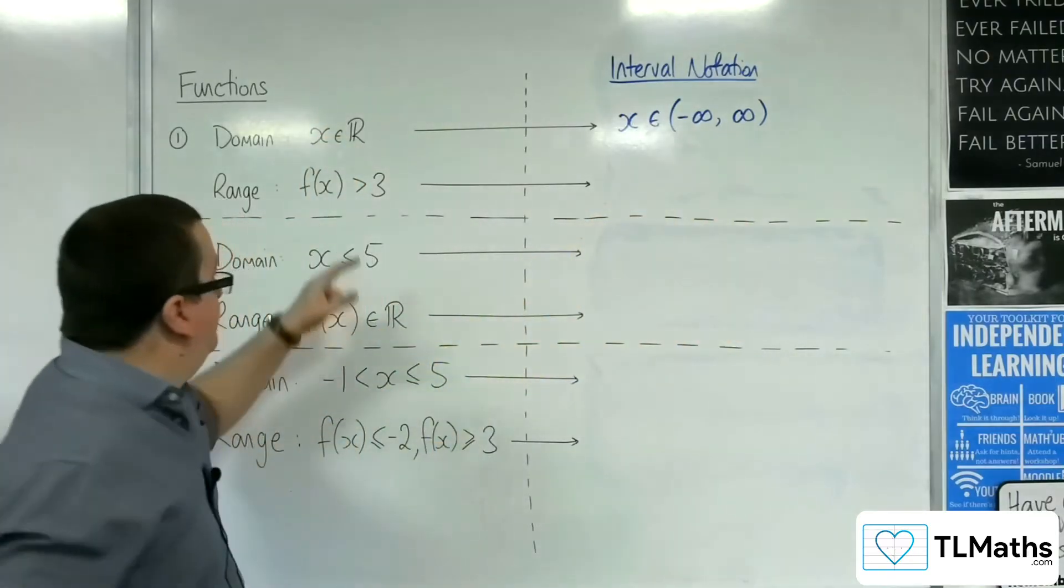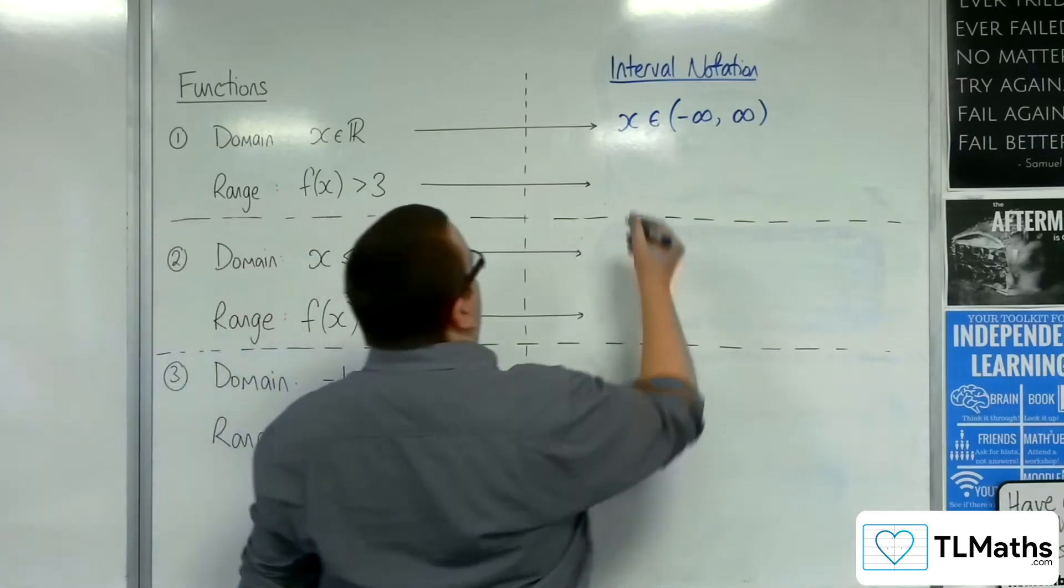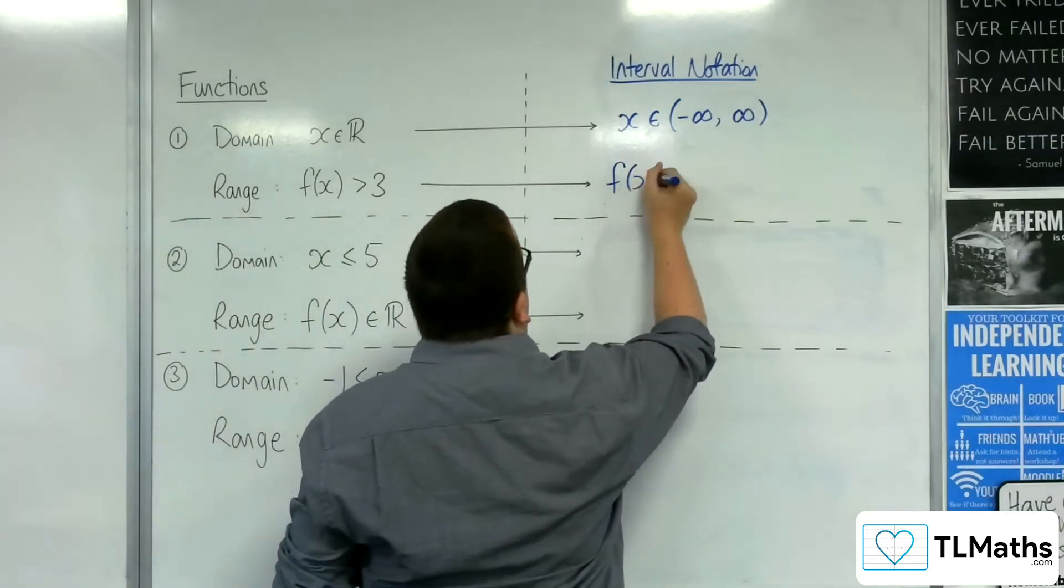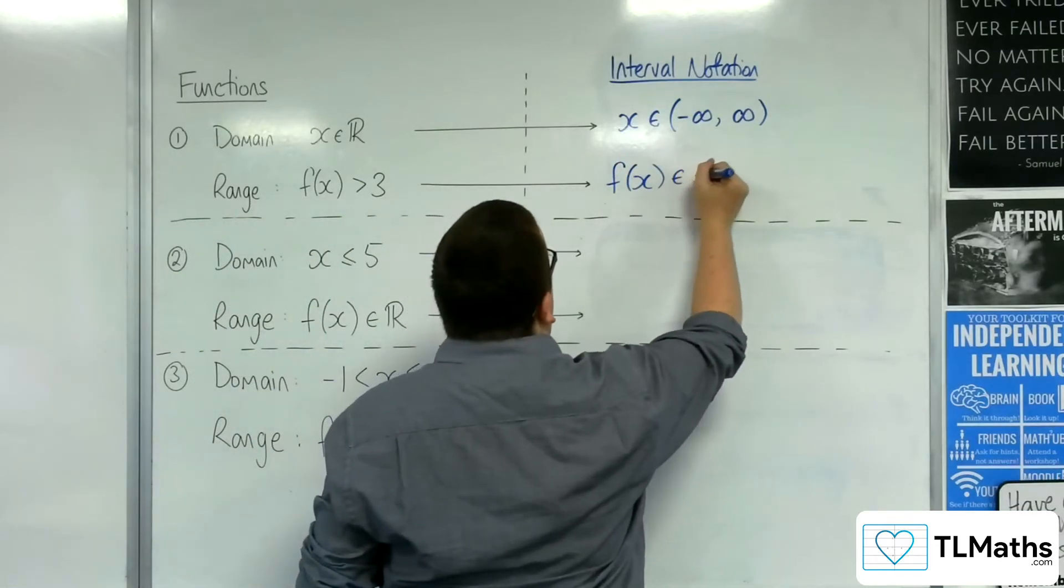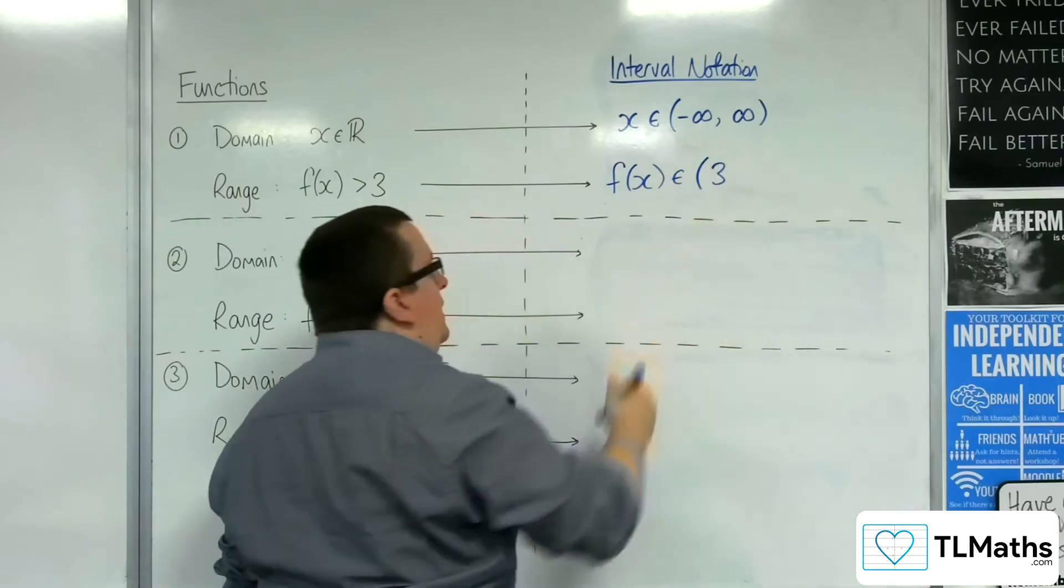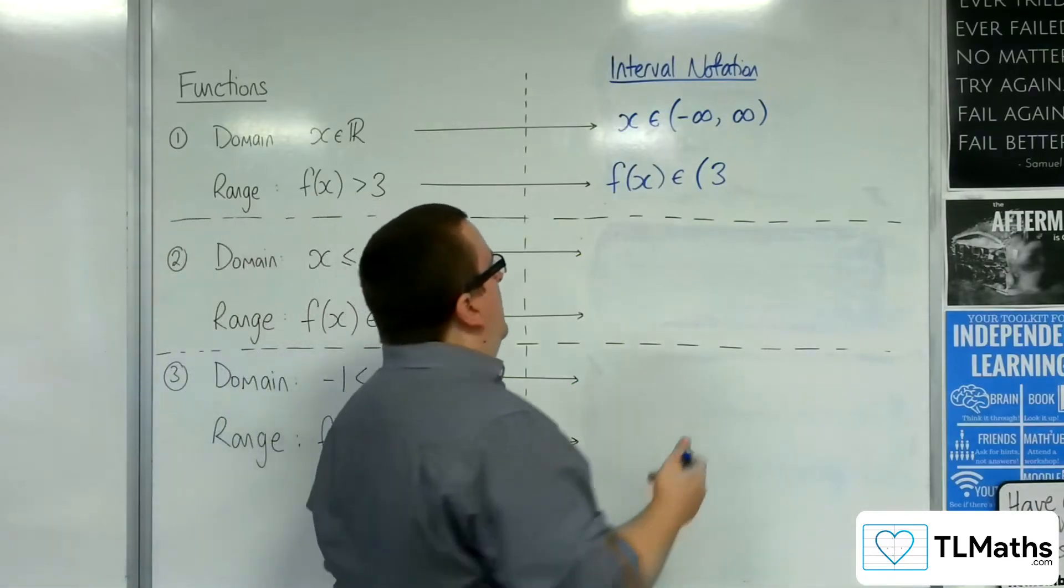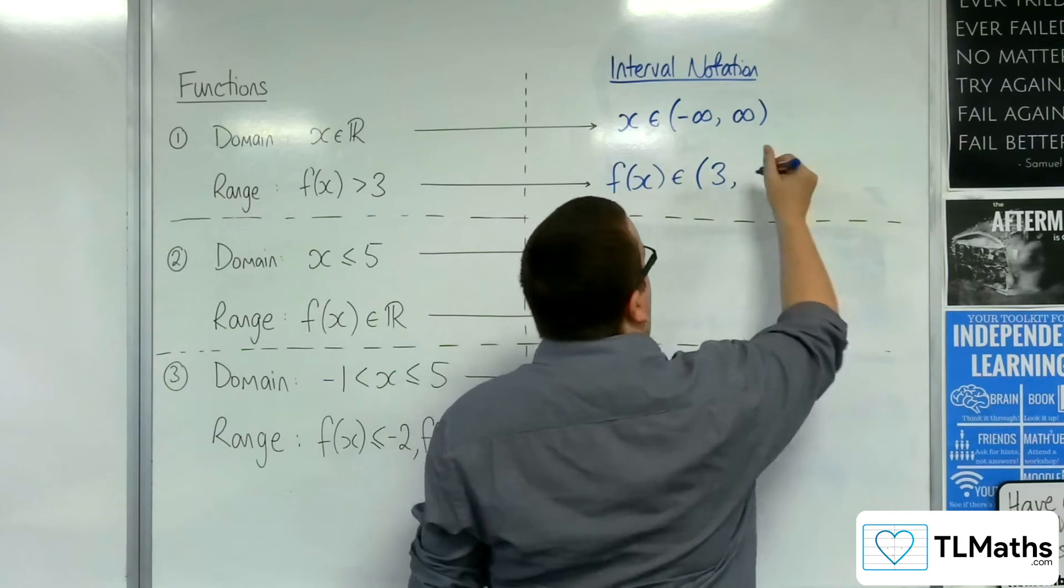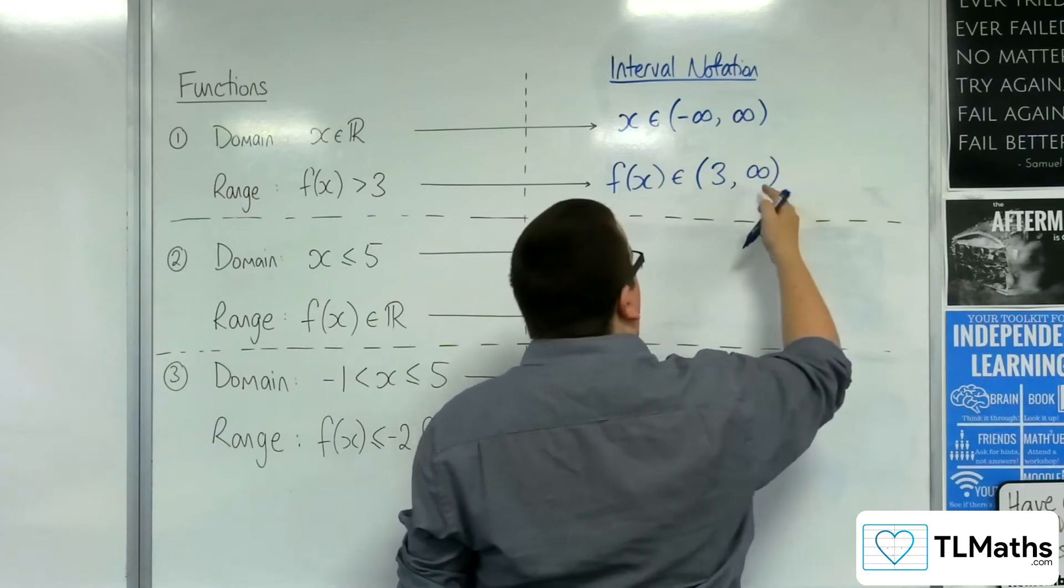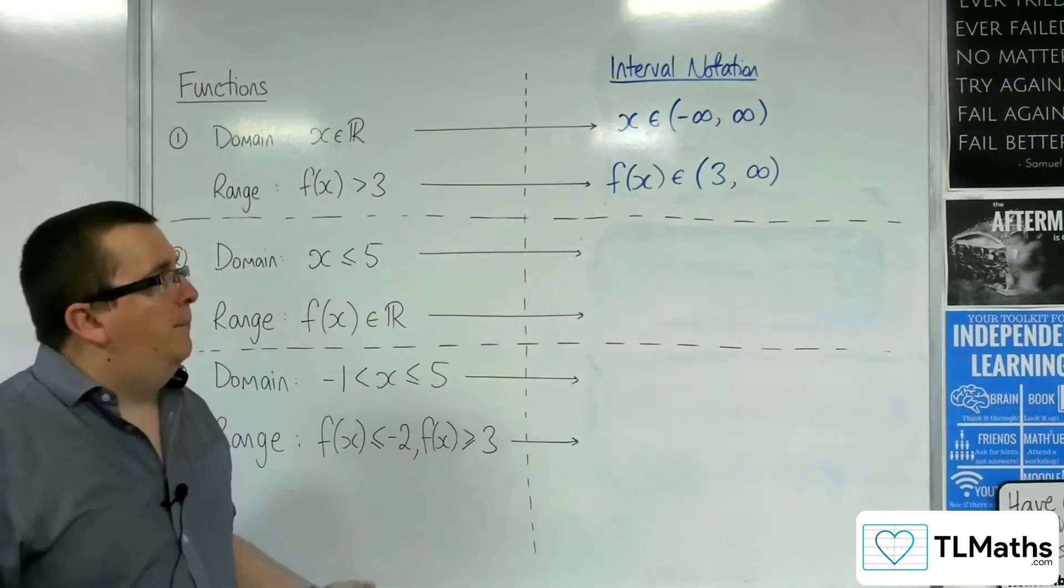Now, if I said that f of x is greater than 3, then I would be saying, well, f of x can be any value from 3, but not including 3, so I'll use a curved bracket to mean not including, all the way up to positive infinity, and a curved bracket, because I'm not including infinity, infinity is not a number.